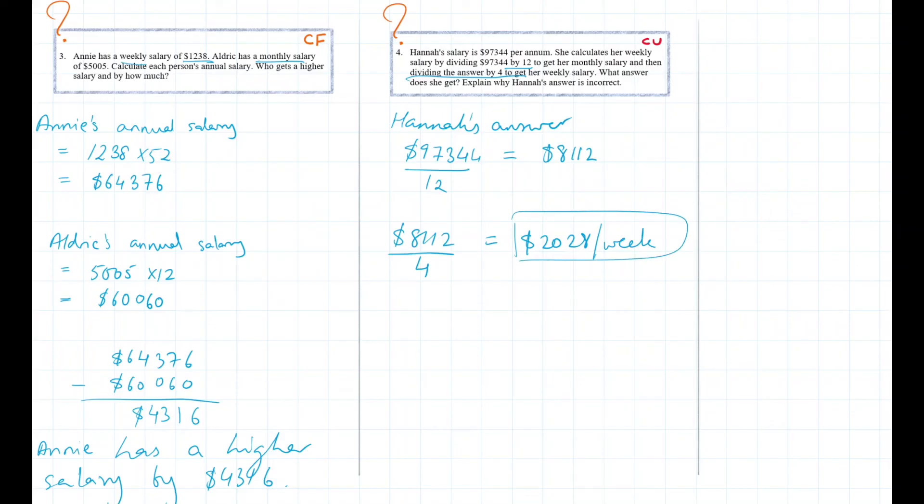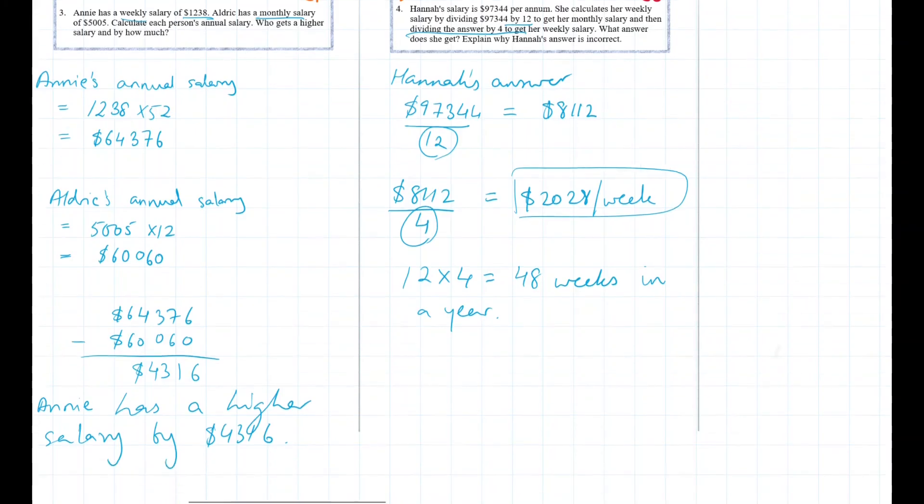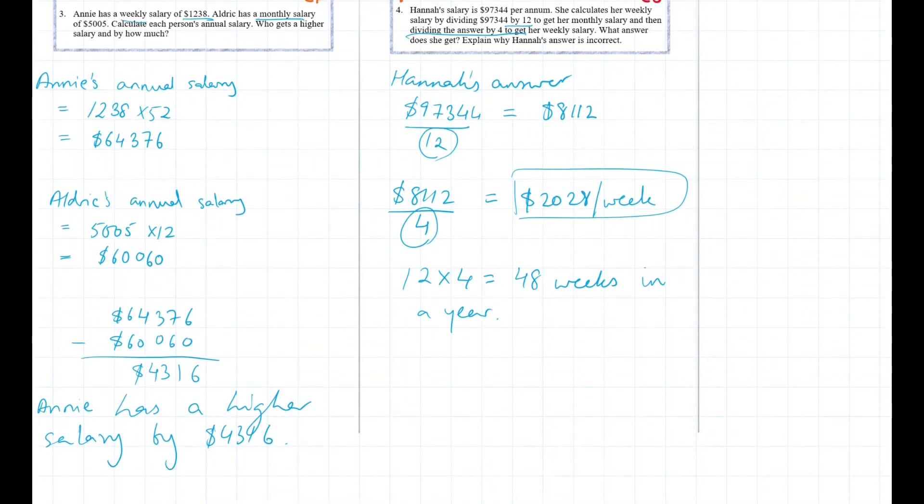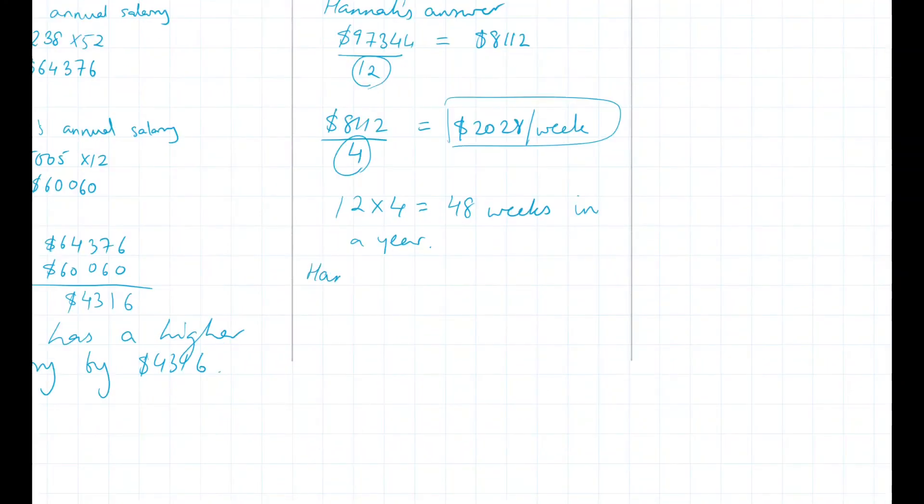Now we need to explain why this is incorrect. Well, her answer assumes that there are 4 weeks in each month. So therefore, there are 12 times 4, 48 weeks in a year. So to get her answer, she's divided her annual salary by 48 weeks. But we all know that there are 52 weeks in a year. So that's why Hannah's answer is incorrect.